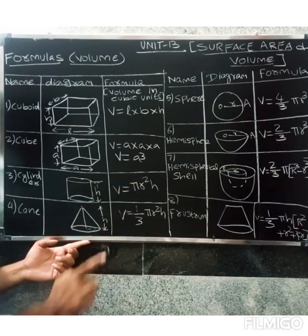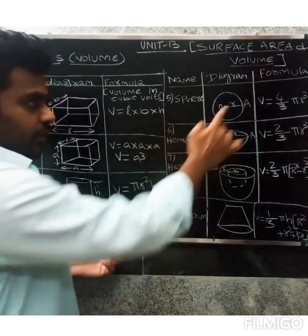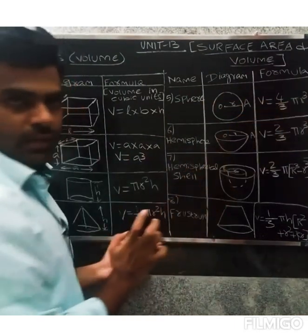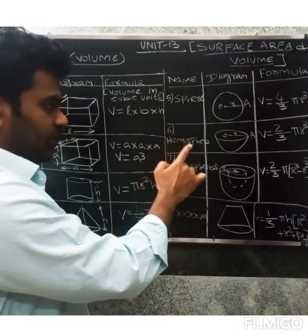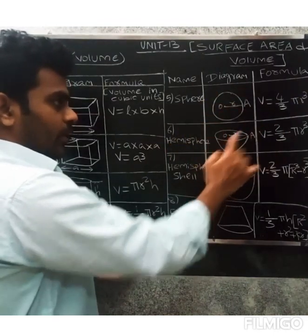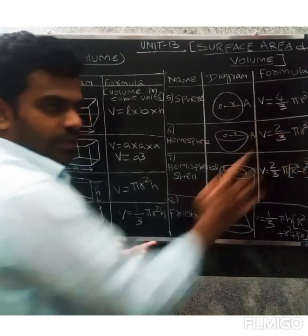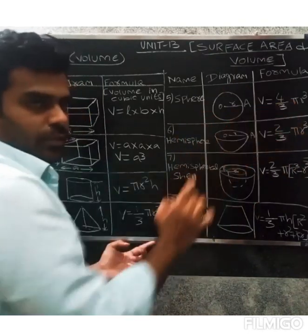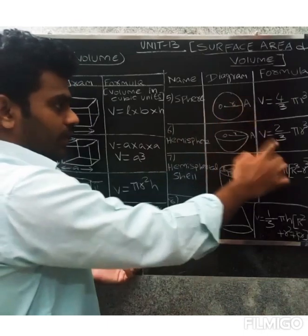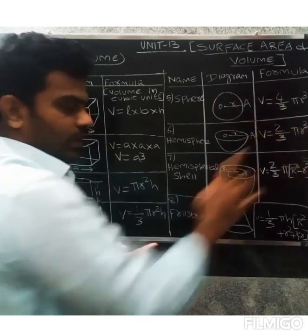Next is sphere. Sphere formula: V = 4/3 πr³. Sixth is hemisphere. Hemisphere is half of the sphere, so 4 divided by 2 gives us 2/3 πr³. Sphere is the full shape with 4/3 πr³, hemisphere is half so it's 2/3 πr³.